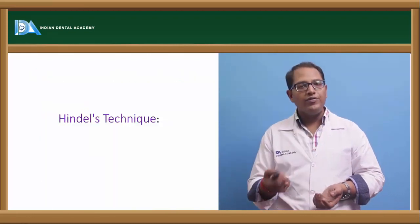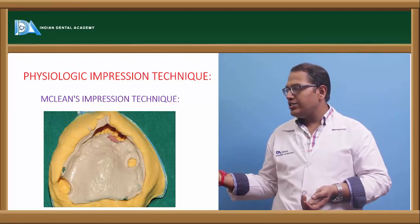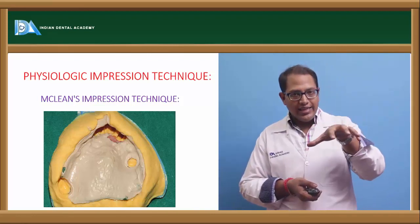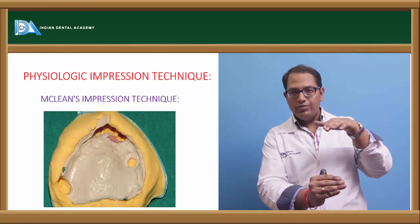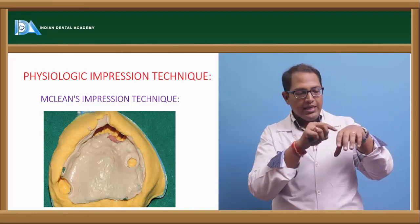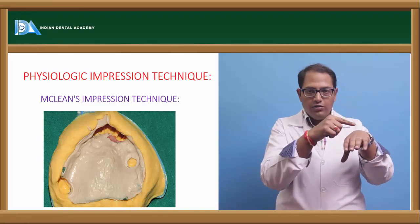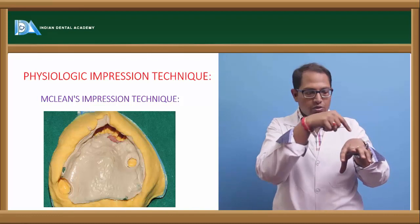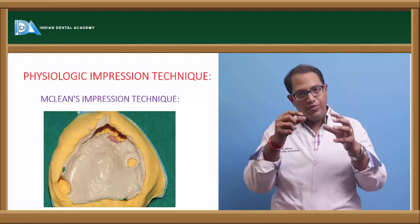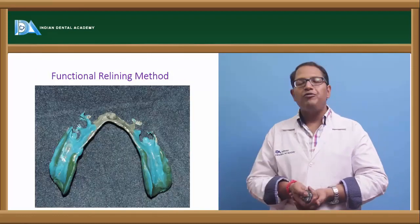Hindle modified McLean's technique. He said that when using the alginate impression, the tray behind the alginate in the edentulous area should be cut out. So the setup becomes: custom tray, wax rim, and alginate — but the alginate is removed from the edentulous area, leaving just the wax rim and custom tray in that region. This meant pressure was applied directly onto the wax rim without the alginate. However, the same problem persisted — pressure was still being applied with fingers rather than occlusal pressure — so Hindle's technique was also discarded. Then came the functional relining technique.